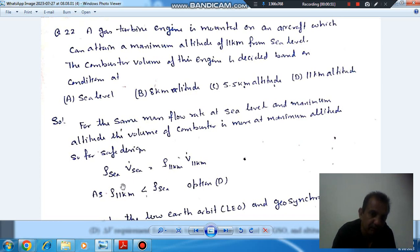So if we write the mass flow rate, rho sea level into V dot is equal to rho 11 km into V dot 11 km. So we get the volume, more volume at 11 km altitude.